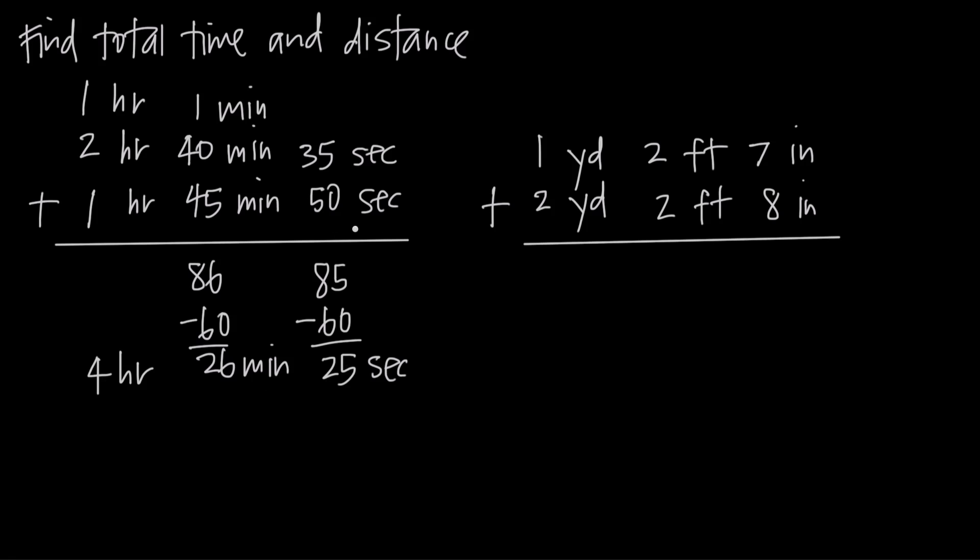Notice that when we added our seconds together, if we had a minute and some seconds, we took that minute and brought it to the minutes column. When we added our minutes together, if we had an hour and some minutes, we brought that hour to the hours column and only listed the minutes.